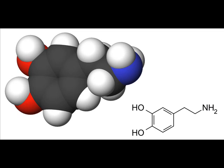Dopamine can be supplied as a medication that acts on the sympathetic nervous system, producing effects such as increased heart rate and blood pressure. However, because dopamine cannot cross the blood-brain barrier, dopamine given as a drug does not directly affect the central nervous system.